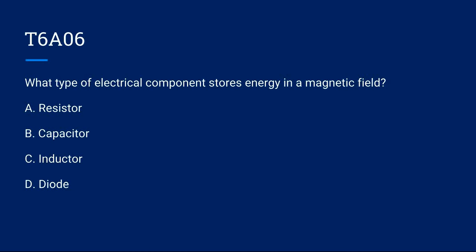T6A06: What type of electrical component stores energy in a magnetic field? A, resistor. B, capacitor. C, inductor. Or D, diode? The correct answer is C, inductor.